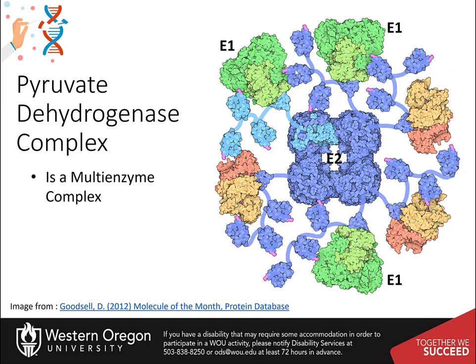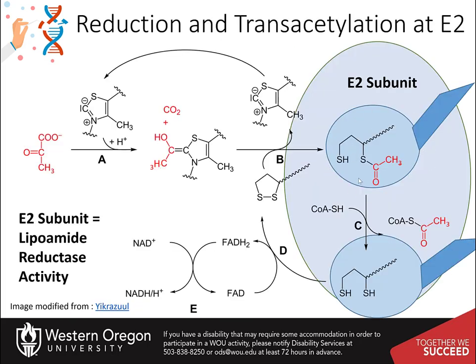Here you can see the partially reduced lipoamide cofactor forming a thioester intermediate with the acetyl group from pyruvate. The acetyl hydrolipoamide intermediate will then shift from the E1 subunit and move to the E2 subunit. At this point, the hydrolipoamide thioester functionality is positioned into the dihydrolipoyl transacetylase E2 active site, where a transacetylation reaction transfers the acetyl group from the swinging arm of the lipoamide to the thiol of coenzyme A. This produces acetyl-CoA, which is released from the enzyme complex and subsequently enters the citric acid cycle, and also fully reduces the lipoamide cofactor to dihydrolipoamide. Thus, the E2 subunit can also be called lipoamide reductase transacetylase.